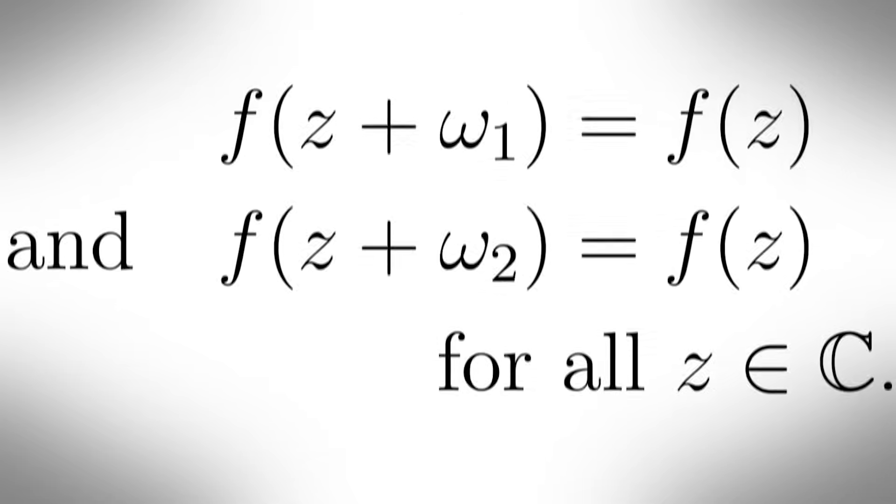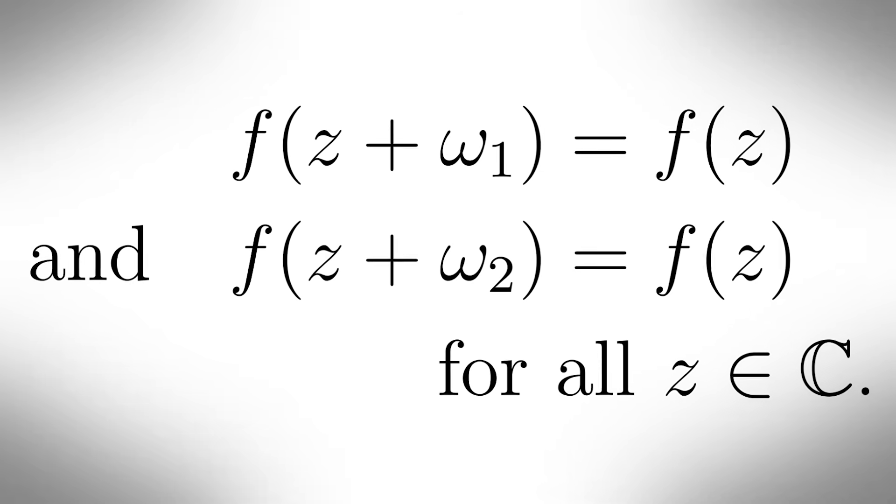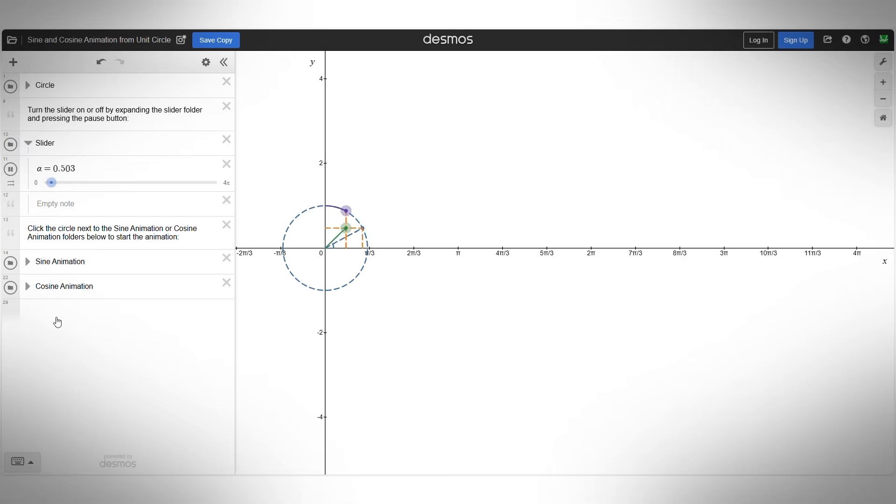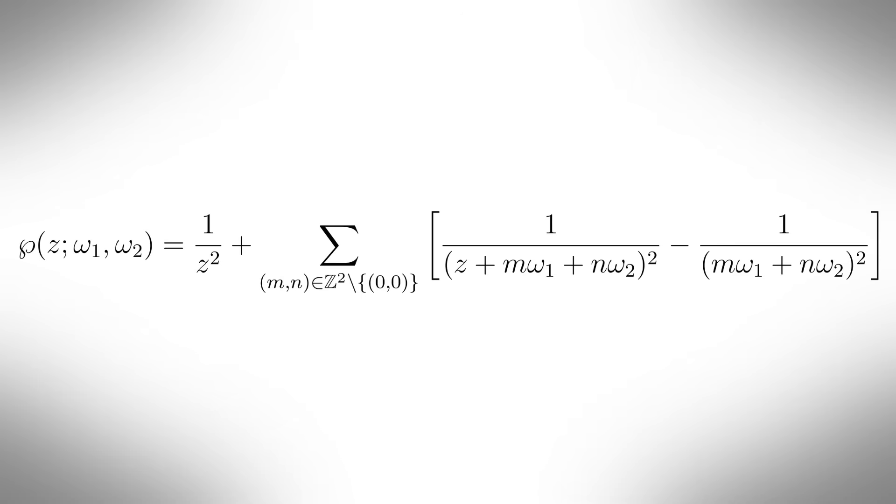Elliptic functions. An elliptic function is a special kind of function that repeats its values in two directions in the complex plane. You can think of it as a complex function that behaves like a two-dimensional version of a sine or cosine wave. For example, the Weierstrass elliptic function, which is written as Weierstrass of z.